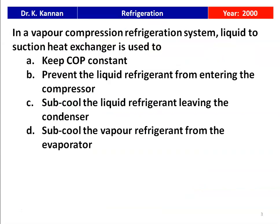The first question is from the year 2000. In a vapor compression refrigeration system, a liquid-to-suction heat exchanger is used to: keep COP constant, prevent the liquid refrigerant from entering the compressor, sub-cool the liquid refrigerant leaving the condenser, or sub-cool the vapor refrigerant from the evaporator. The correct answer is: sub-cool the liquid refrigerant leaving the condenser. That is the purpose of the liquid-to-suction heat exchanger.